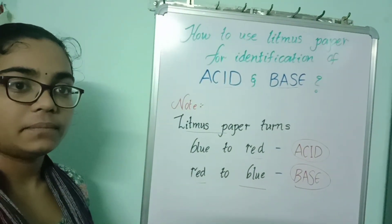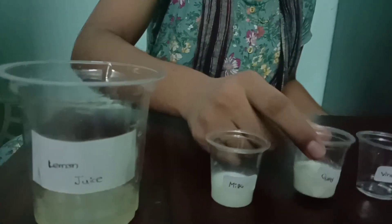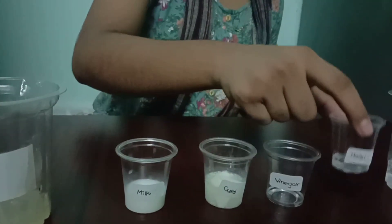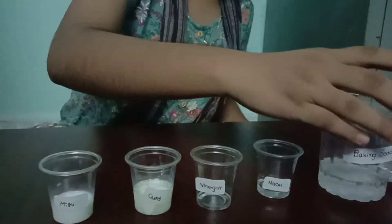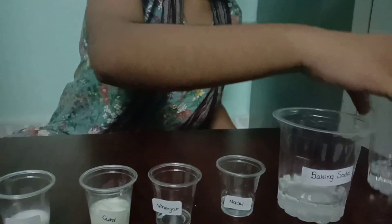So let us do the experiment. The materials I am using are some lemon juice, milk, curd, vinegar, NaOH — sodium hydroxide — baking soda, and water. We also need litmus paper. This is blue litmus paper and this is red litmus paper. Now let us check one by one.